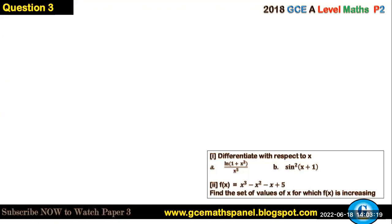Let's answer this question. So this question reads differentiate with respect to x. The first part is ln(1 + x²)/x⁵. So to differentiate this, we have a rational function, right.